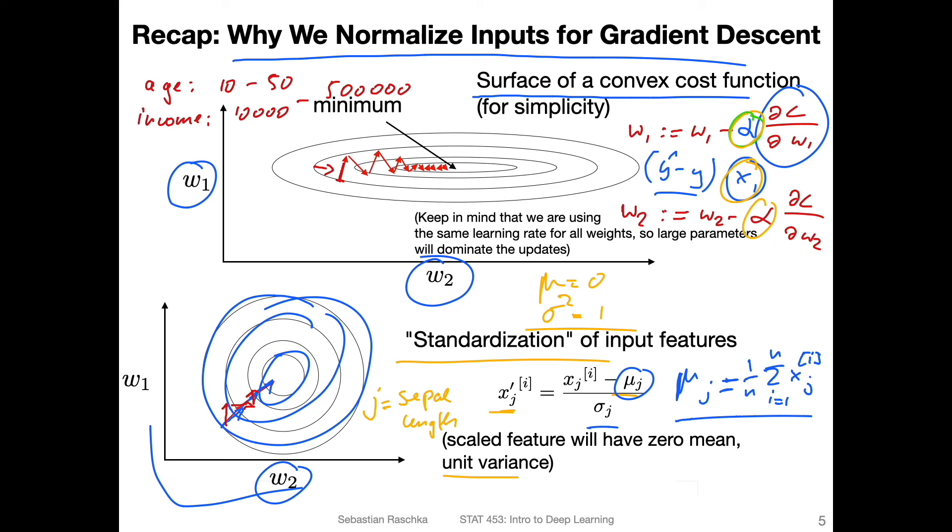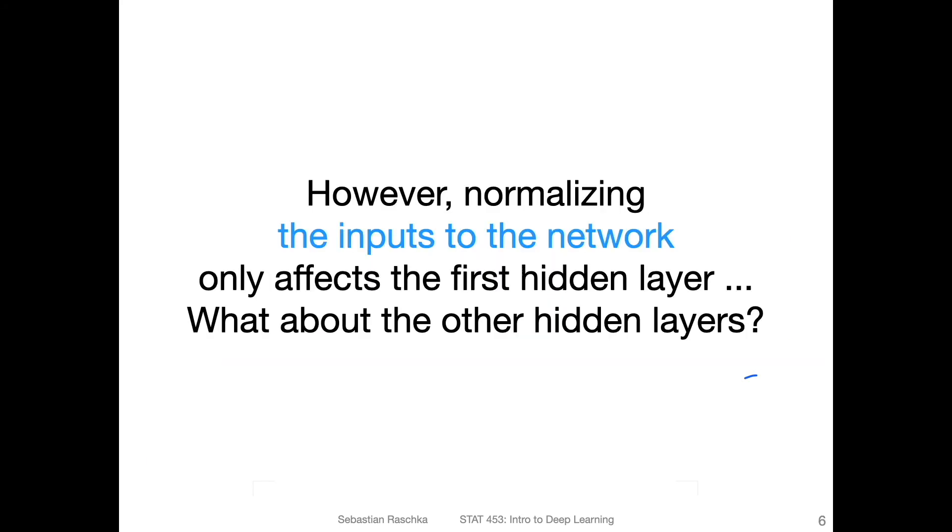Okay, so this is one way we can standardize the inputs. But now when we talk about deep neural networks, so let's say we have the inputs here, x_1 and x_2, and then we have activations a_1, a_2, a_3, and then let's say we have two output units, let's call it o_1 and o_2.